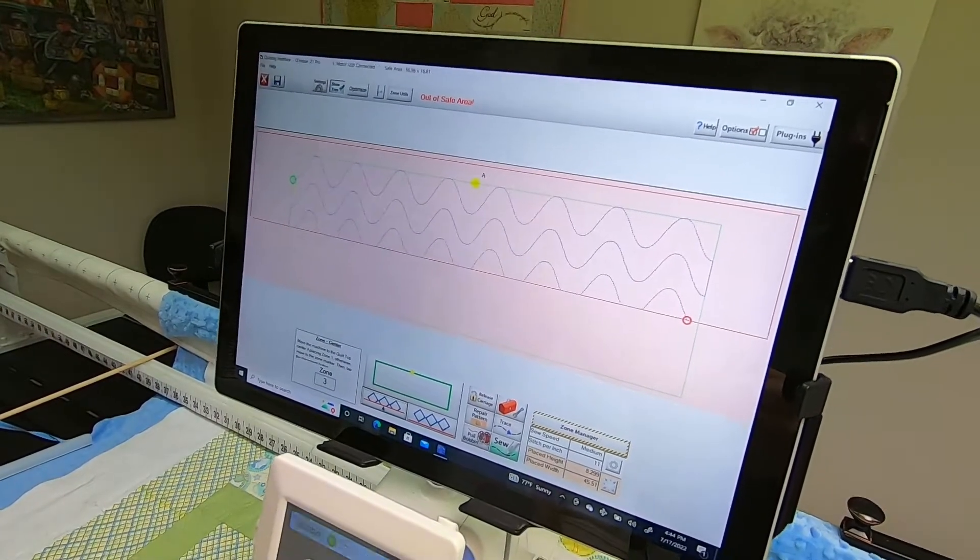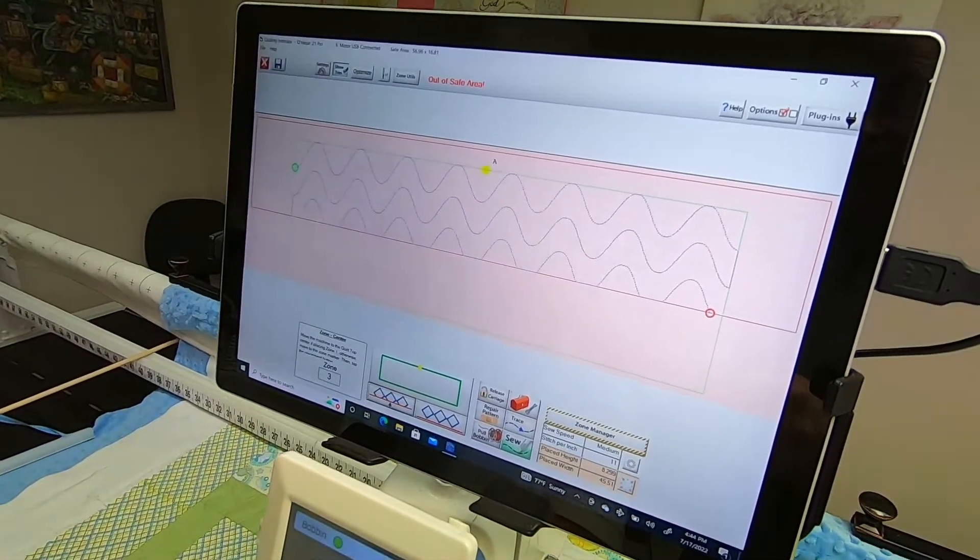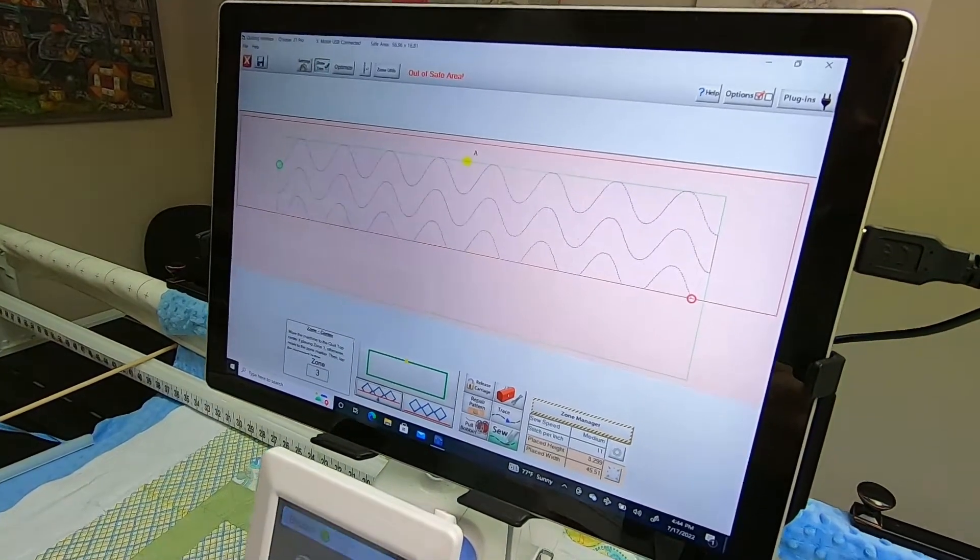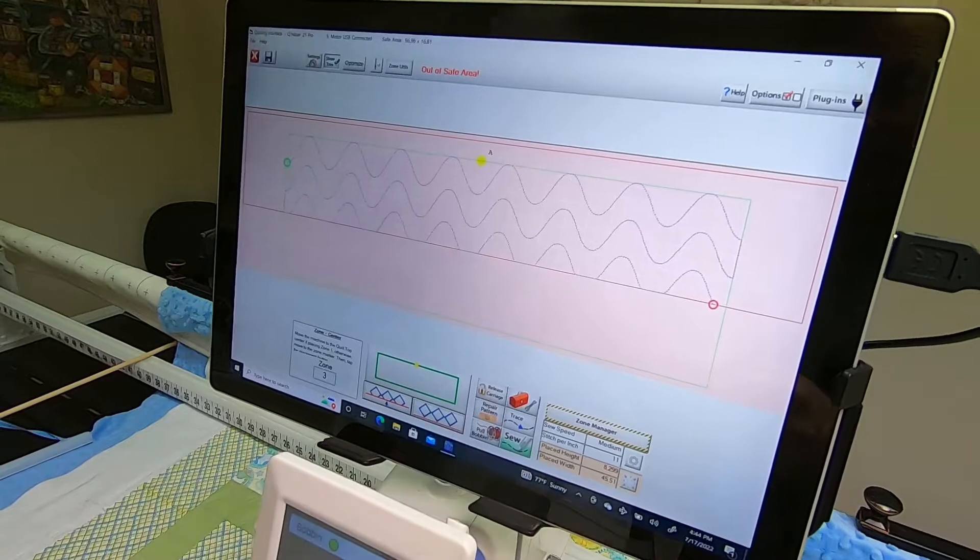At this point all I have to do is pull bobbin and sew. That's how easy this feature is to use. If you want to toggle it off, you just tap the full diamonds and it goes away.